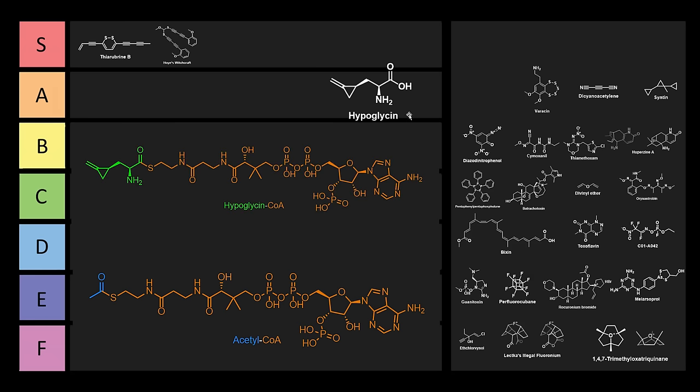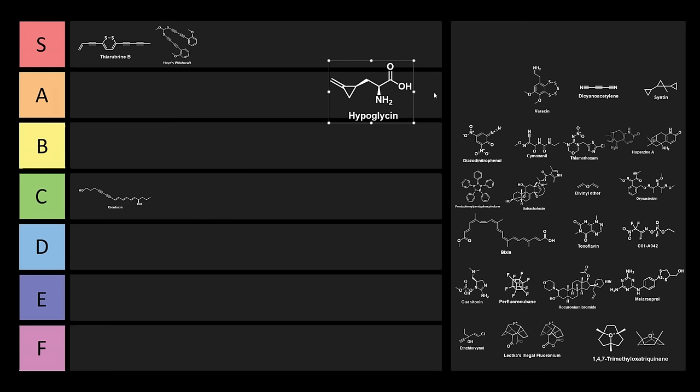However, this is converted into hypoglycin-CoA, and that's the really toxic compound. So this is a protoxin. Overall, I don't think the structure's too bad. We do have an exocyclic double bond connected to a cyclopropane. That's pretty bad, but I don't think it's too bad. I think we could probably put this one right into B tier.